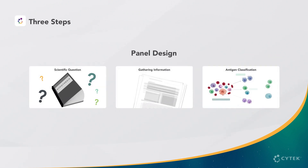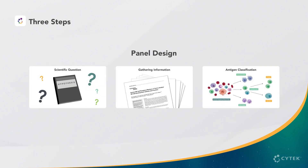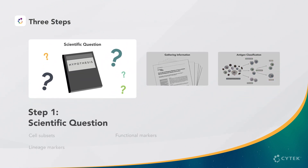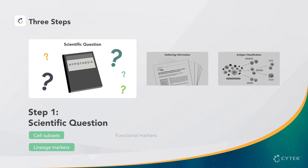Panel design should be an informed process. You should start by following these three steps. First, you must determine the scientific question you want to answer, the cell subsets that will be characterized, and the markers that are needed to define lineage and functionality.